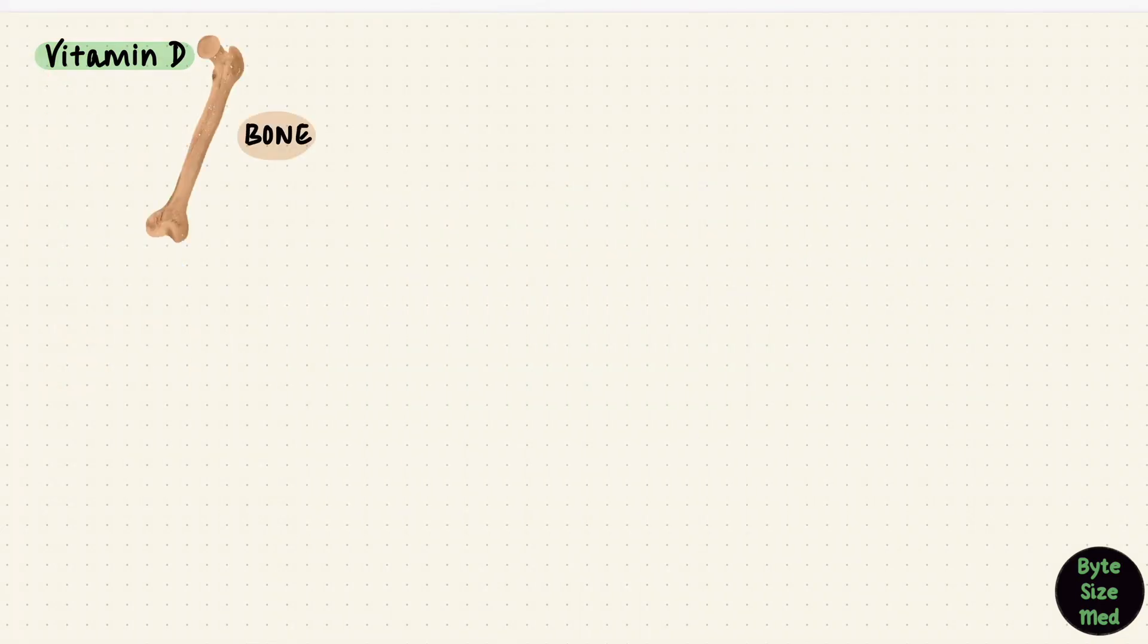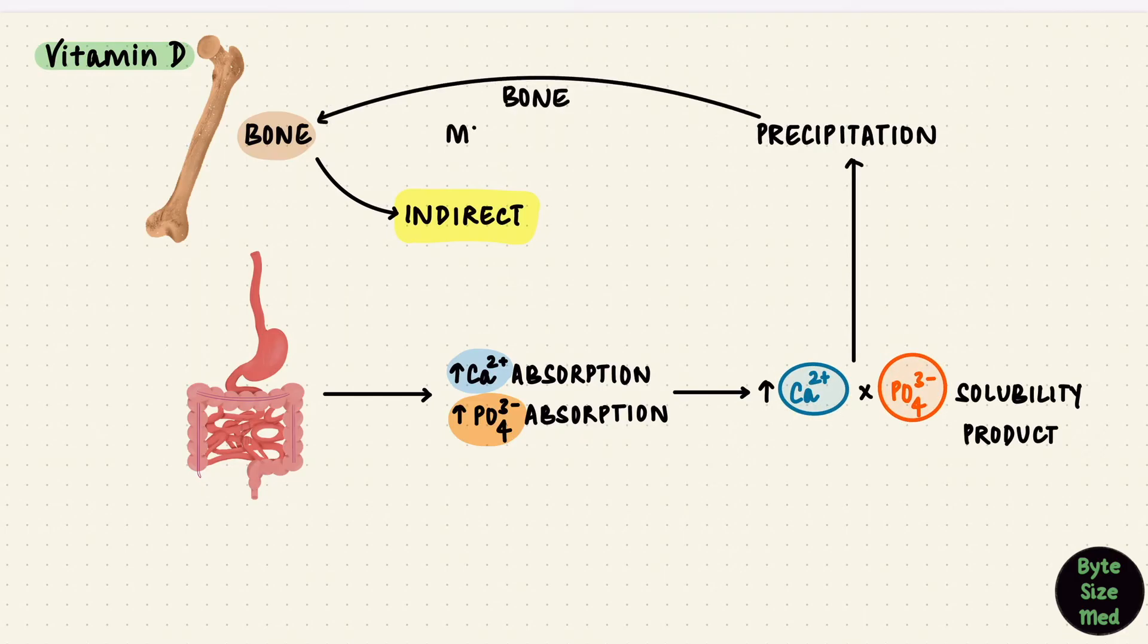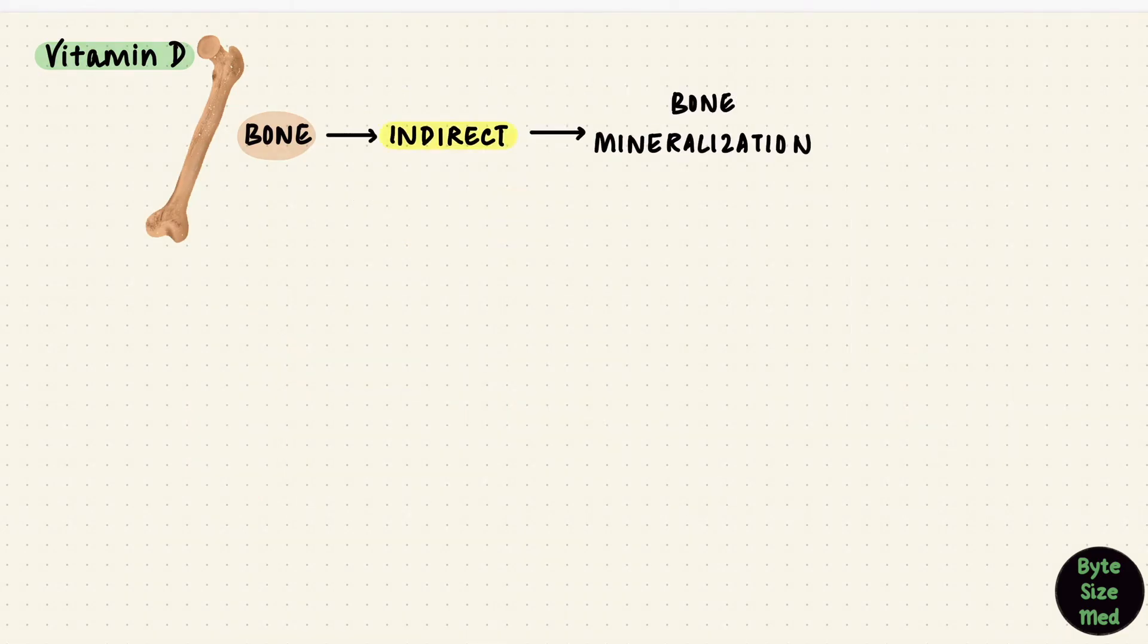But what about bone? Vitamin D can have direct and indirect effects on bone. The indirect effect is more important and that uses what we just learned. By absorbing more calcium and phosphate from the intestines, it increases the solubility product of these ions, making them precipitate, which mineralizes bone. So the indirect effect would be bone mineralization. We know we need vitamin D for mineralizing bones. The direct effect is supposed to be similar to the parathyroid hormone. Most of this stuff is actually not fully understood, but this is what I picked up when I read about it.